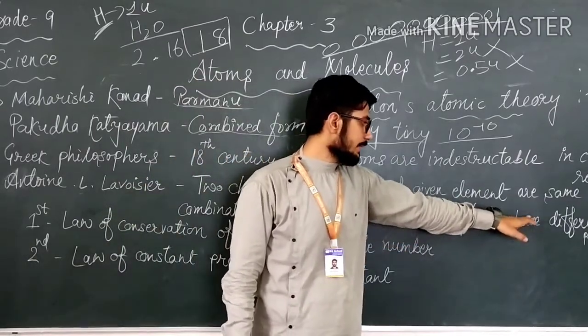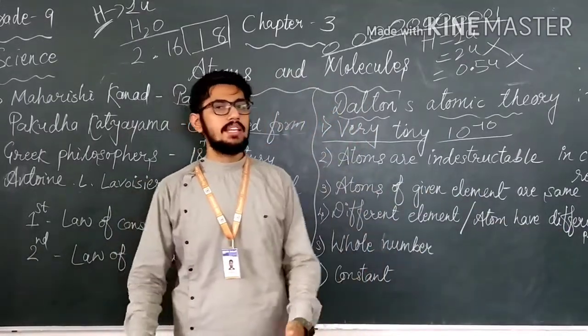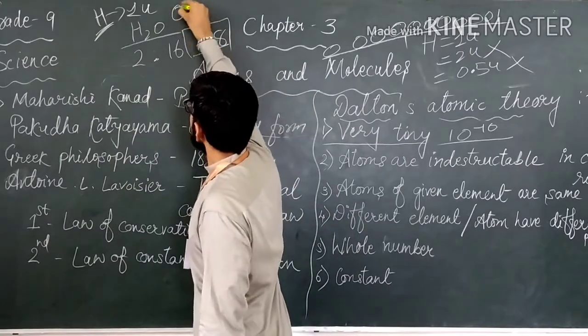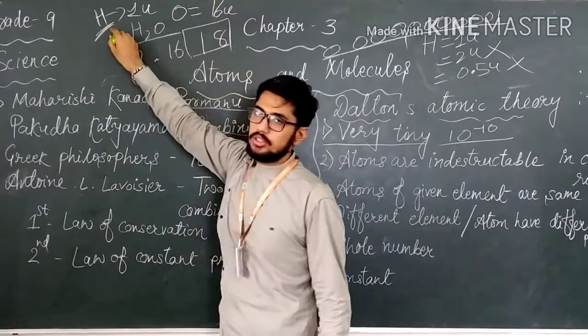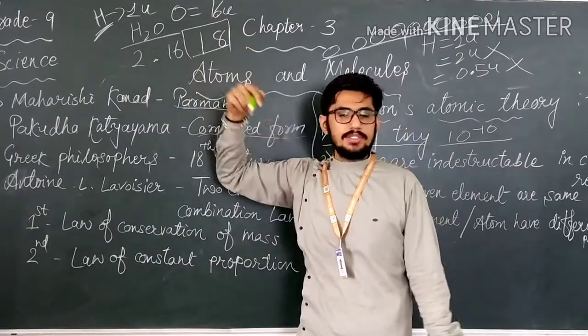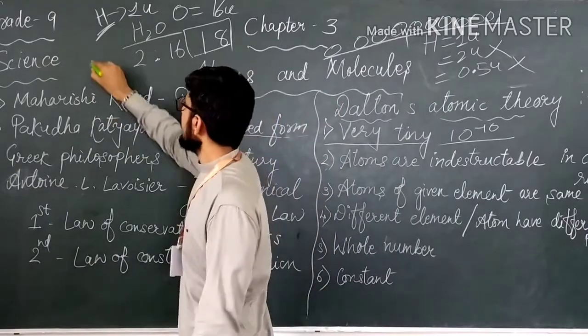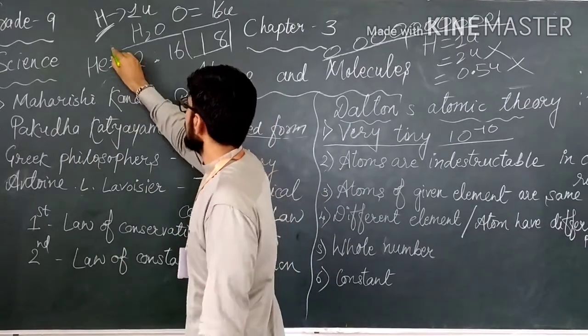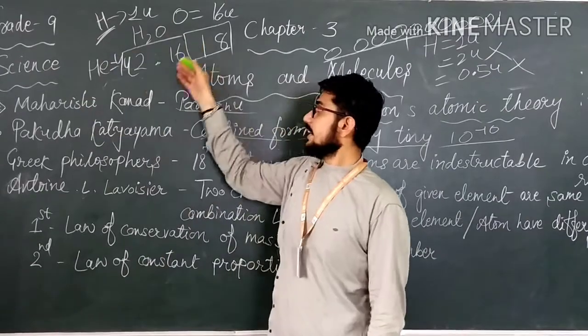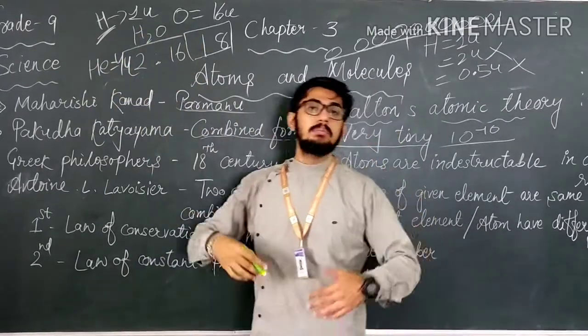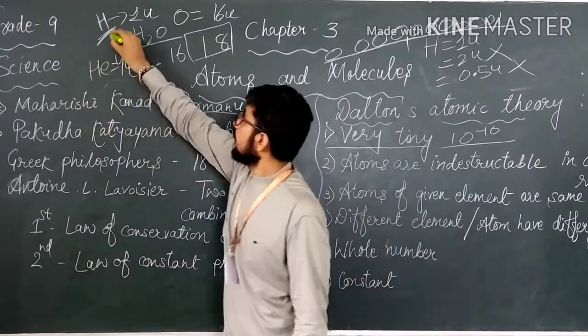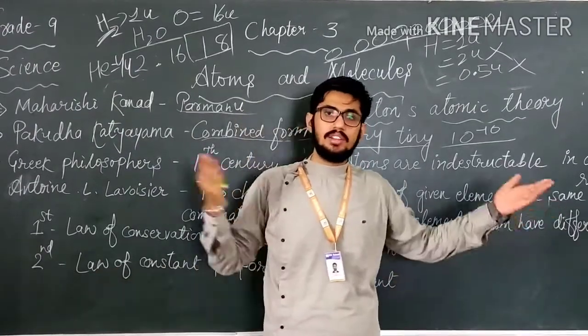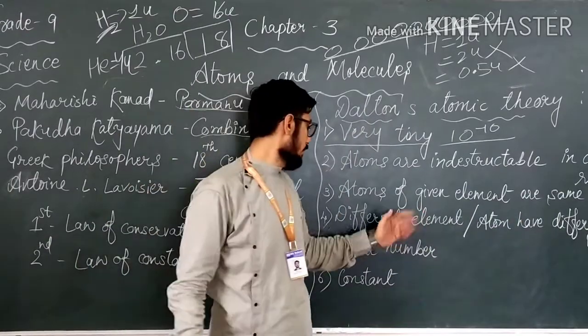Fourth, atoms of different elements are different in properties. If there are two different elements, then their properties will be different. Obviously, hydrogen, if we take another example, oxygen. Oxygen, if we say, has a mass of 16. Hydrogen's mass is 1, oxygen's mass is 16, so the mass is different. If we take helium, helium has a mass of 4, which is different. So different atoms have different properties, different mass. Hydrogen is present in diatomic form, helium is present in monoatomic form. So different atoms have different properties and different mass. This is the fourth postulate.